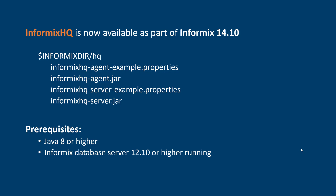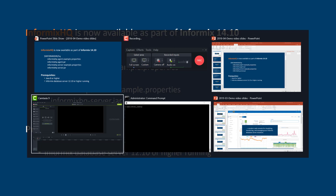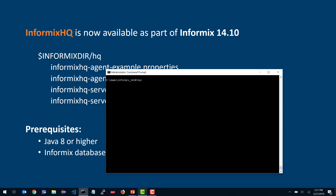Let's jump right in to show you how to start Informix HQ. I'm going to go to my command prompt. I am in my Informix directory's HQ directory, and you'll see the four files I mentioned: the two JAR files for the agent and the server, and the two example properties files. You'll want to start the Informix HQ server first.